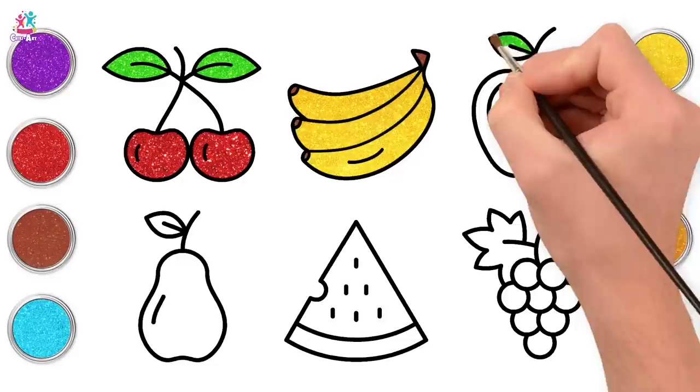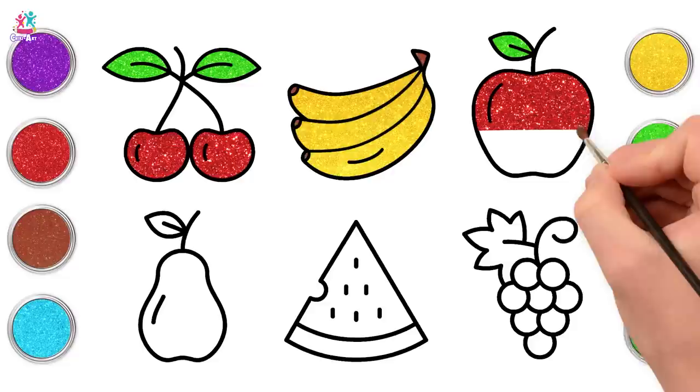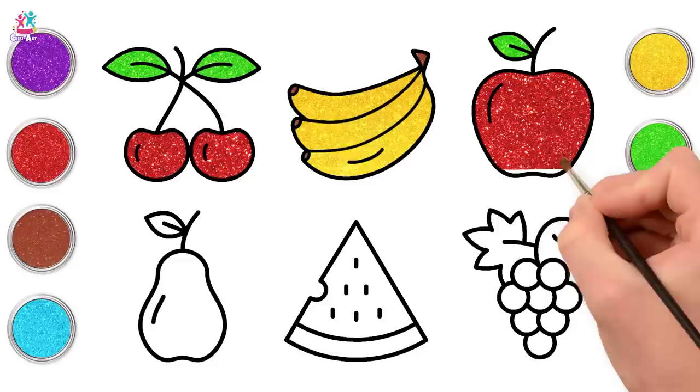Now green for our apple leaf. And red for our apple. Of course we can get apples in varying colours, so you can choose what colour you'd like yours to be. But we're doing a nice red juicy apple.